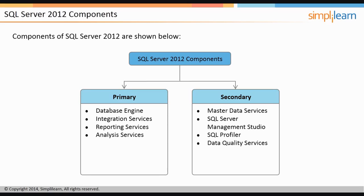Data Quality Services is a way to clean out data to remove or correct incorrect information that might have crept into the system, either due to incorrect or accidental entry or due to some system fault. By creating rules on what data is considered good and bad, this service can identify and optionally clean this data out.